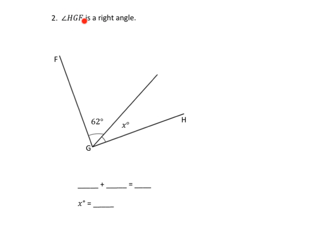So here we're told that angle HGF is a right angle. Here's the letter H way over here, here's G, here's F. We are told that this angle is a 90-degree angle, which means this arc right here is equal to 90 degrees.